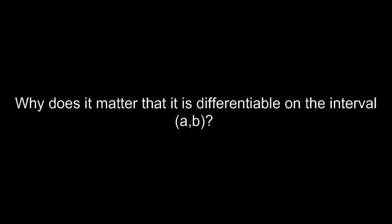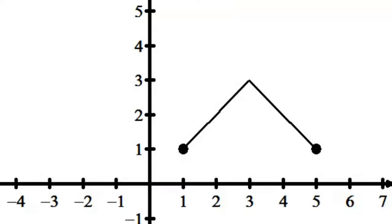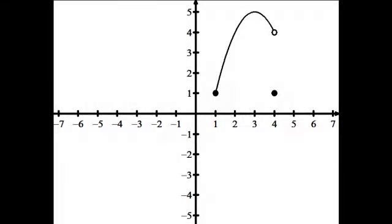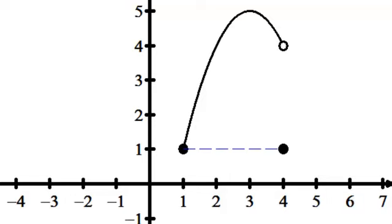Why does it matter that the function must be differentiable between the endpoints? Here's a case where it's continuous between 1 and 5, but at x equals 3 the function is not differentiable because the slopes are not approaching the same value from the left and the right. The slope over a to b was 0, but there was no place between them where the slope was 0. Now, can you possibly have a value of c that satisfies the conclusion even if the conditions aren't met? Yes — it could happen, but there's no guarantee.